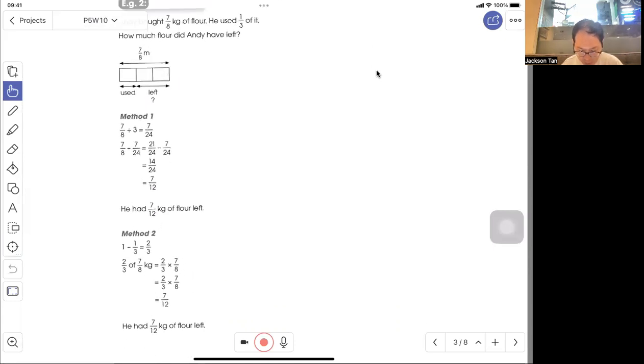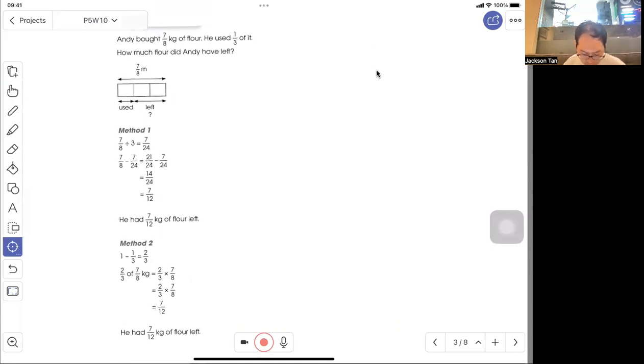Method 2: First find the fraction left. If he used 1/3, then 2/3 is left. So 2/3 of 7/8 kg equals 7/12 kg left. So there are two methods.